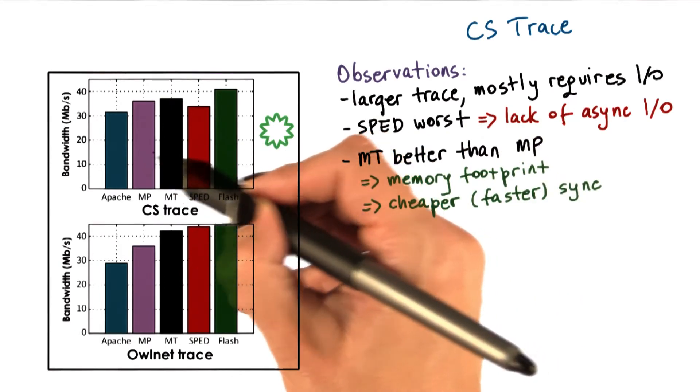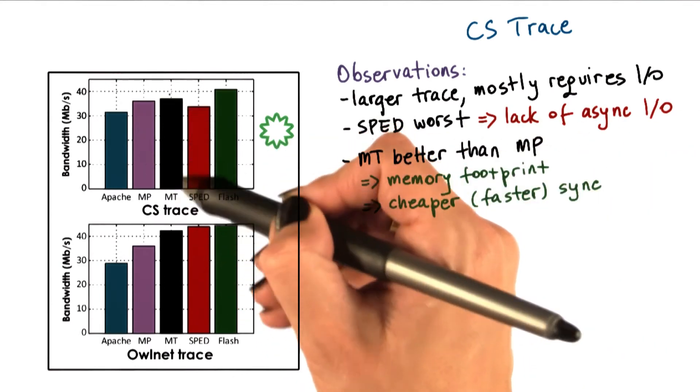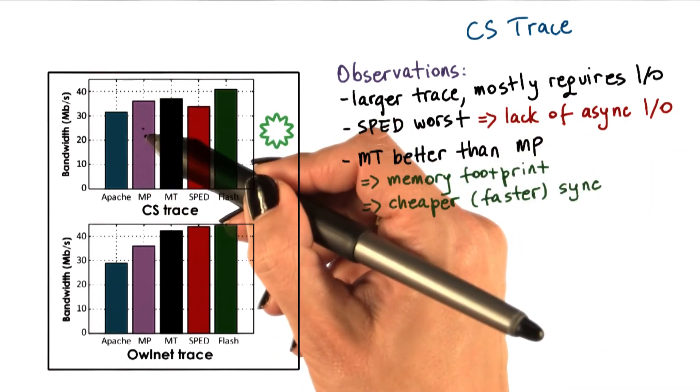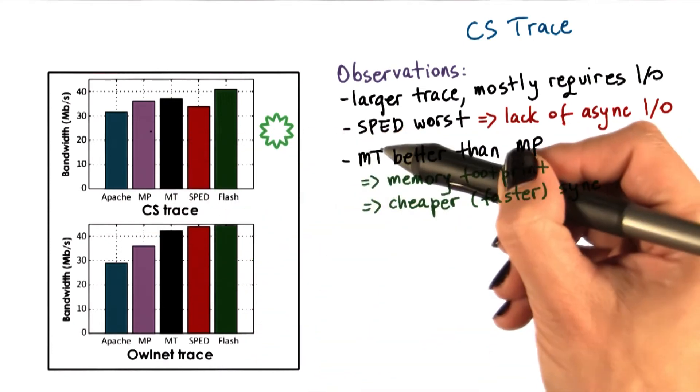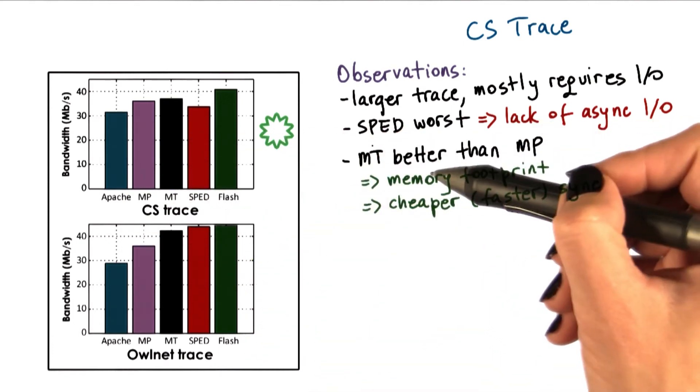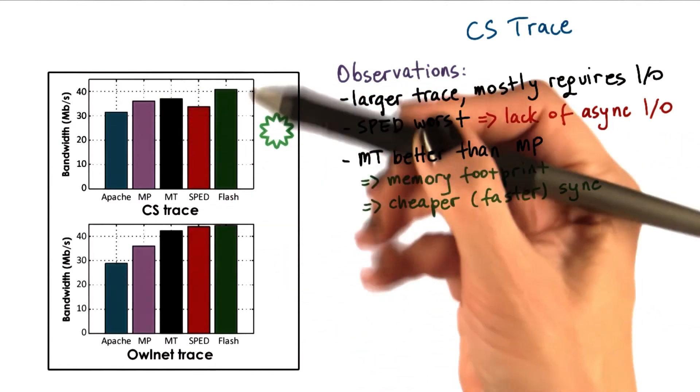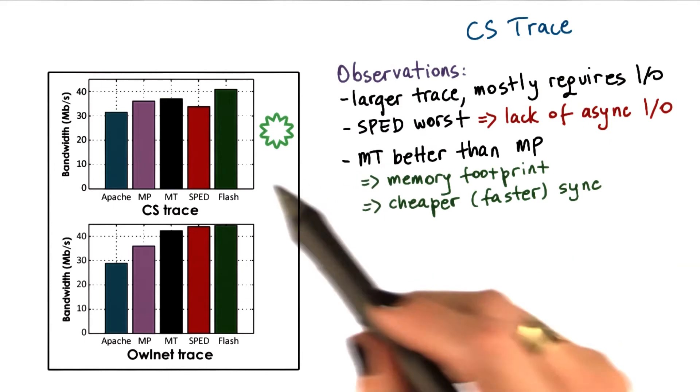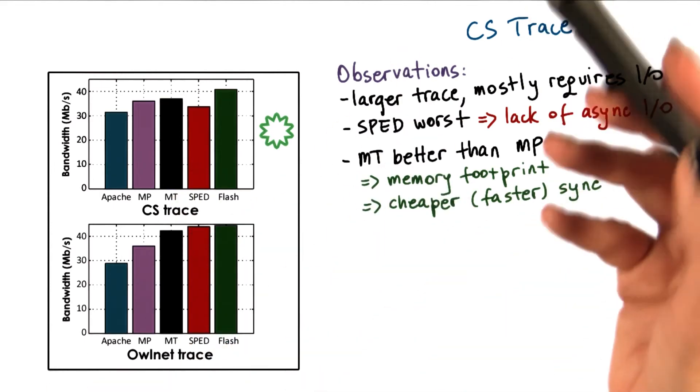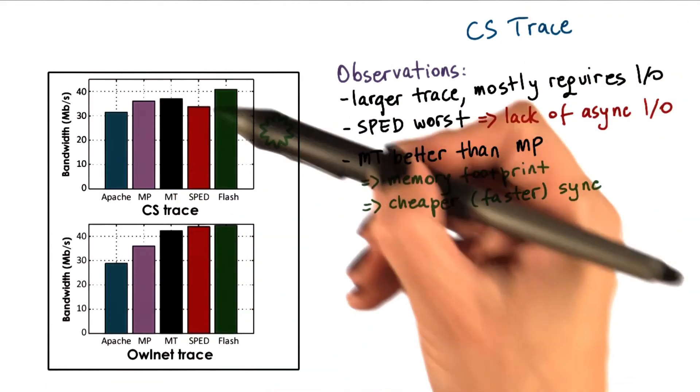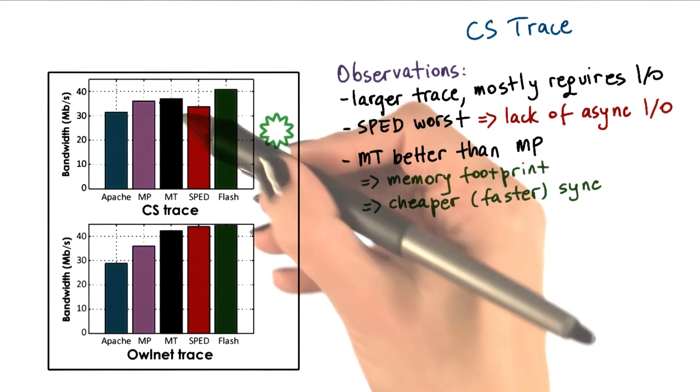Considering the multithreaded and the multiprocess, we see that the multithreaded is better than the multiprocess, and the main reason for that is that the multithreaded implementation has a smaller memory footprint. The smaller memory footprint means that there will be more memory available to cache files. In turn, that will lead to less IO, so this is a better implementation.